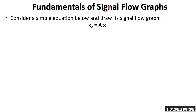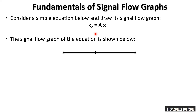Now let us move to the fundamentals of signal flow graph. A linear algebraic equation can be represented using a signal flow graph. For example, x2 = a × x1, where x2 and x1 are variables. Here x2 is the dependent variable — it is the output — and x1 is the input. The constant 'a' is written over the branch connecting them.